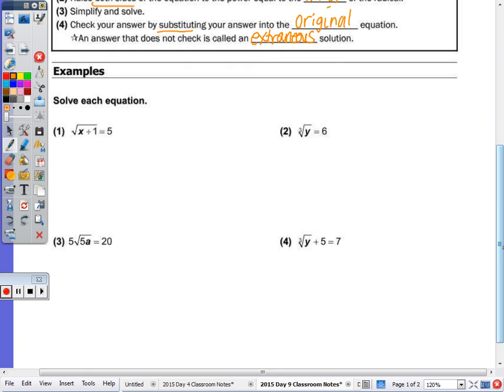So when I take a look at number 1, if we go back to our steps, is the radical isolated? Yes. So now I raise both sides to a power of 2 to undo the square. Remember, when you square, all it does is remove the symbol. So this is x plus 1 equals 25. Subtract the 1, and x is equal to 24. Again, you should go to your calculator, so go to your calculator and check.